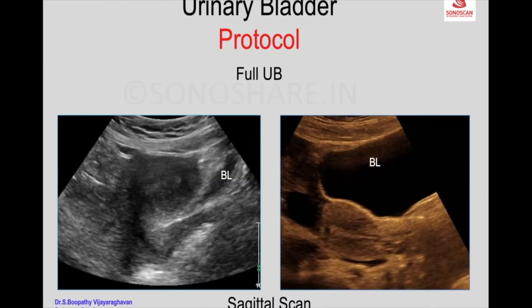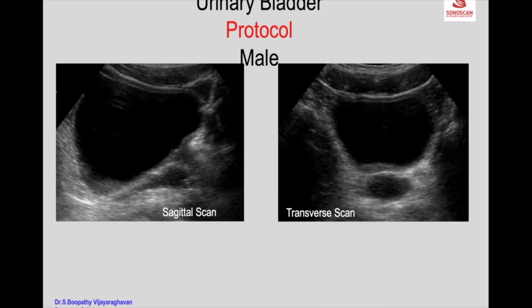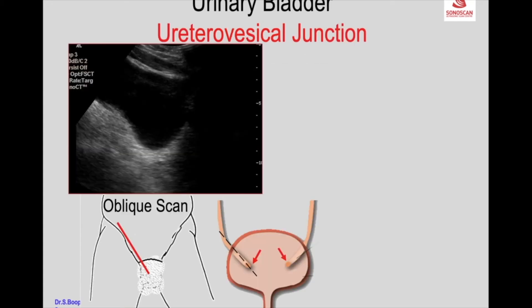A full bladder is required. Now you see the empty bladder — you cannot study the empty bladder. The bladder has to be full to study the bladder as well as structures posterior to it. In the male, you see the sagittal scan and the transverse scan showing the bladder as a fluid-filled structure, the distal ureter, and the distal uretero-vesical junction.